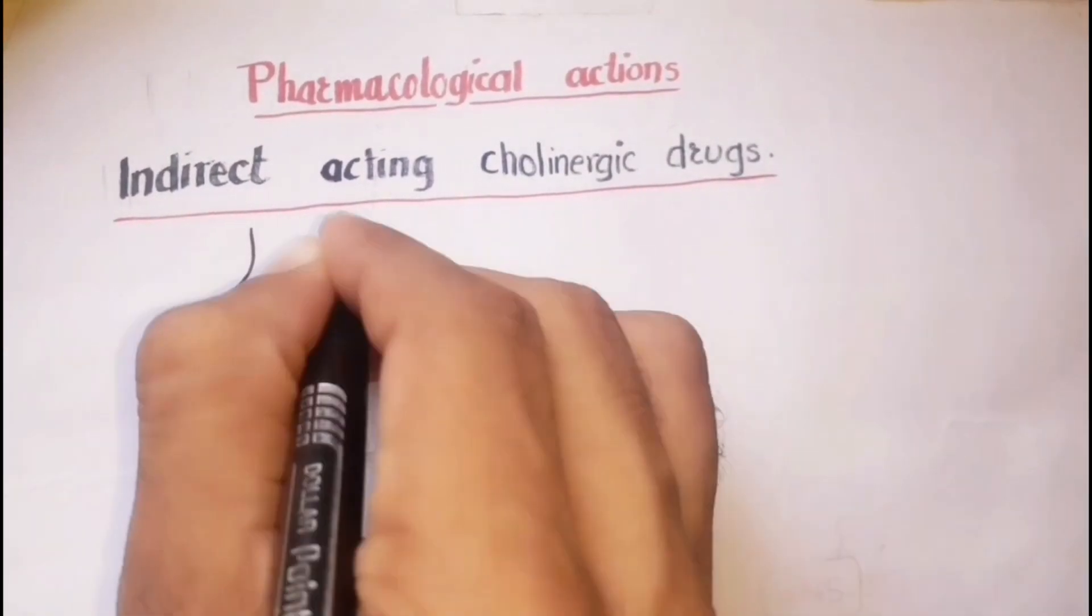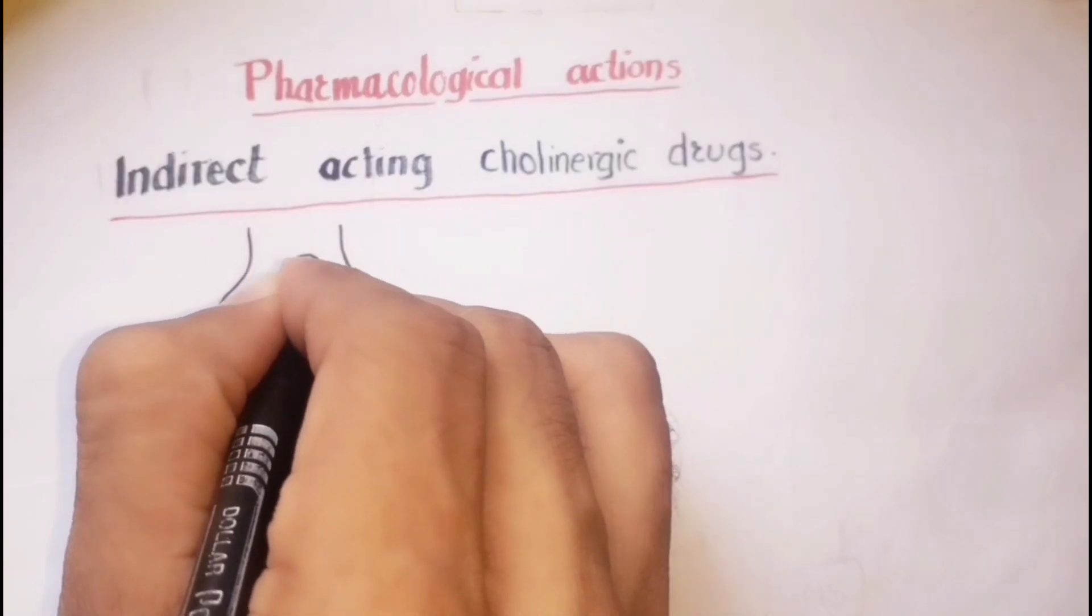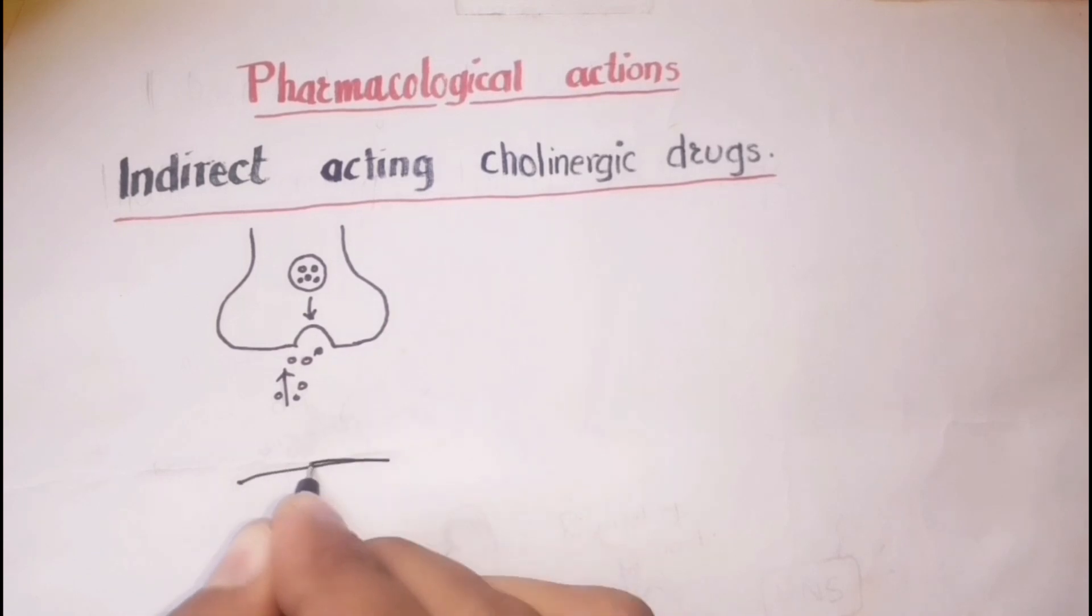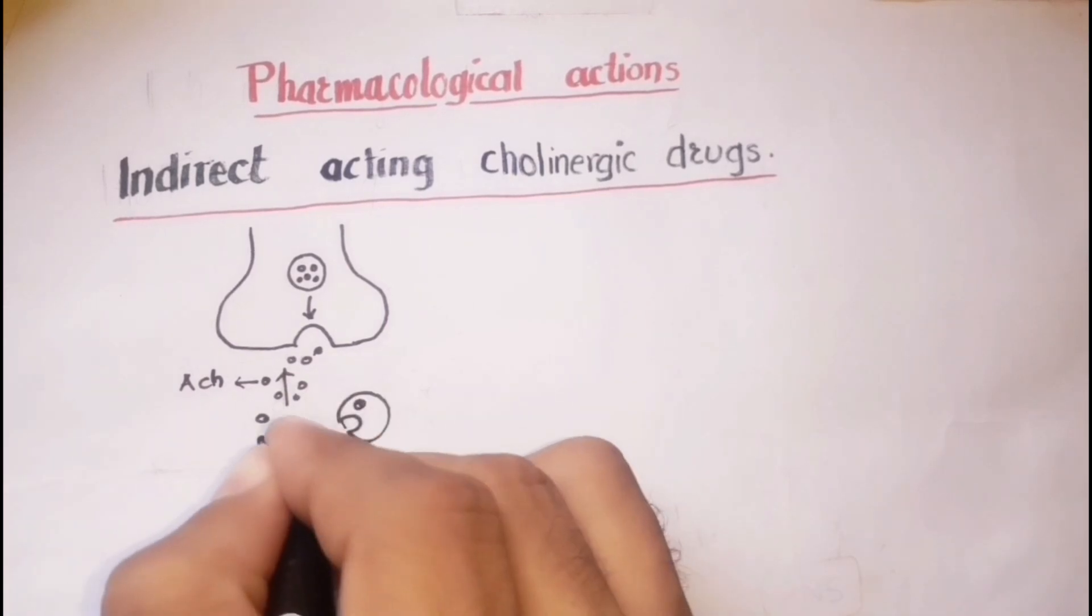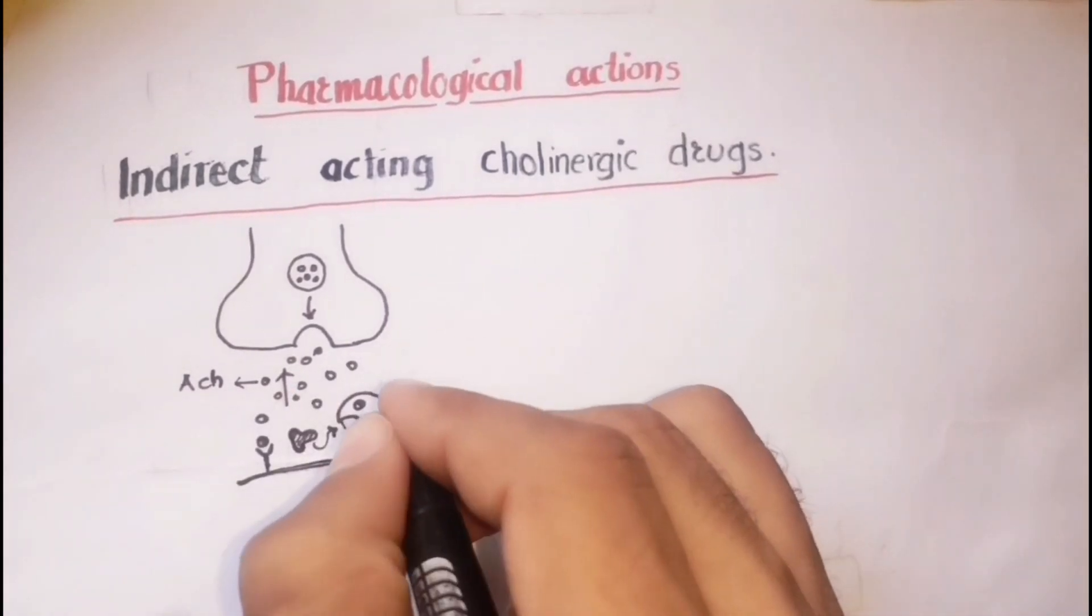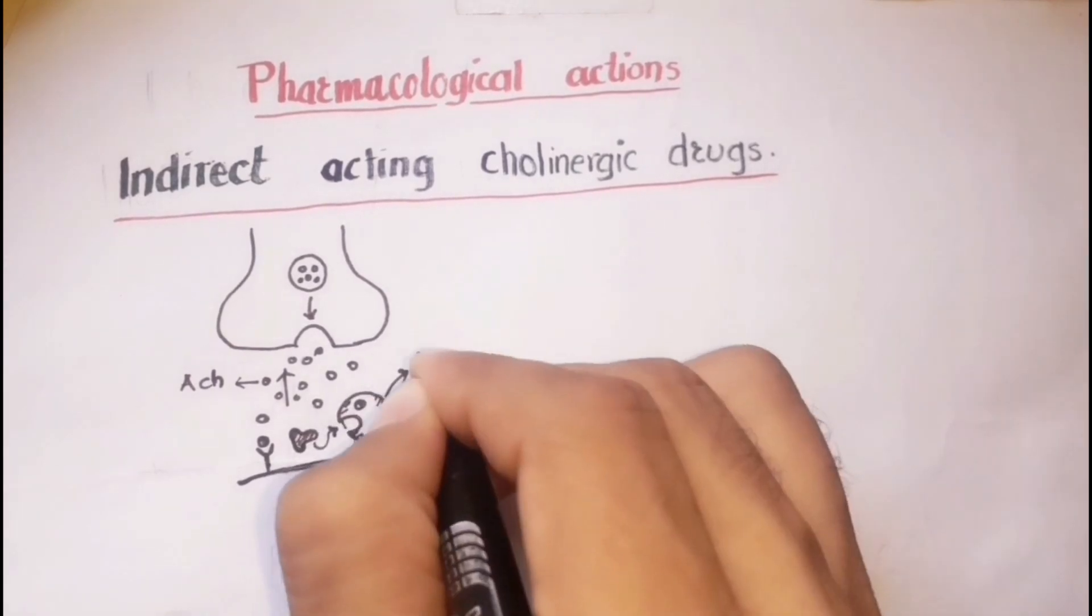The primary action of indirect-acting parasympathomimetics or anticholinesterases is to enhance the actions of endogenous acetylcholine. Indirect-acting agents inhibit acetylcholine esterase enzymes which degrade acetylcholine by hydrolysis.